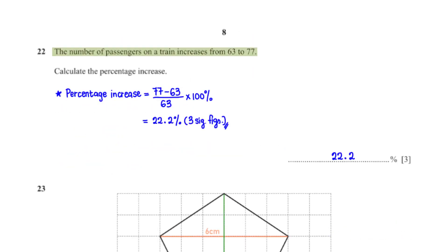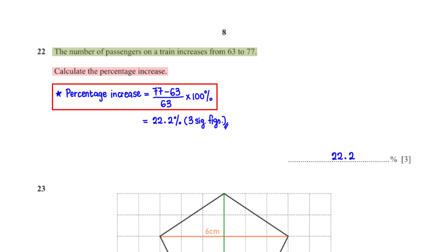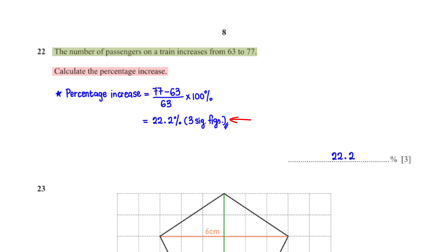The number of passengers on a train increases from 63 to 77. Calculate the percentage increase. The percentage increase equals the increase in passengers, which is 77 minus 63, divided by the initial number of passengers, which is 63, times 100%. When we type this into the calculator, we get 22.2% rounded to 3 significant figures.